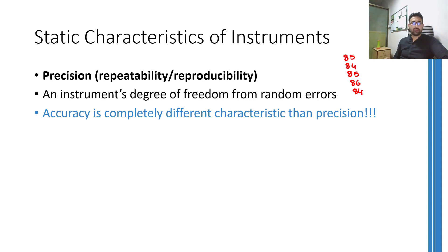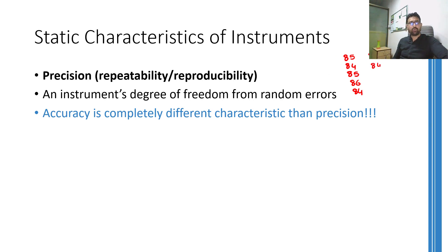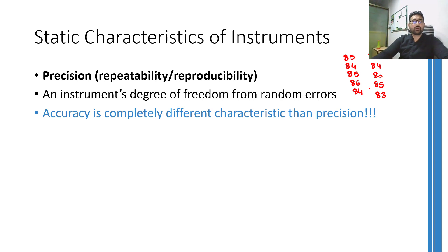A friend of yours has also developed a weighing machine and asks you to stand on it. You repeat the same procedure — stand on it and step down five times. The readings from your friend's machine are 82, 84, 80, 85, and 83. You can now deduce two results: first, your machine is more precise because its output deviated less for the same input compared to your friend's machine.